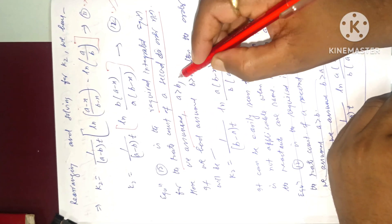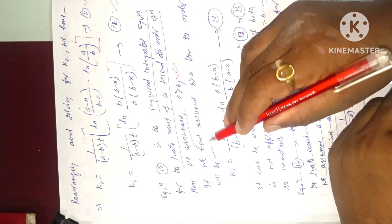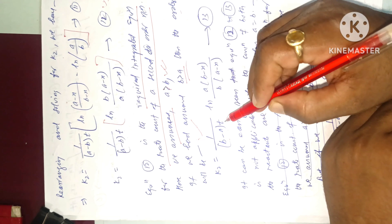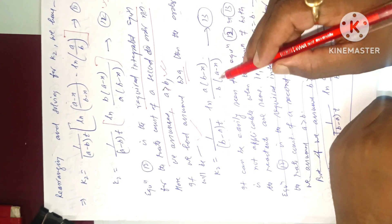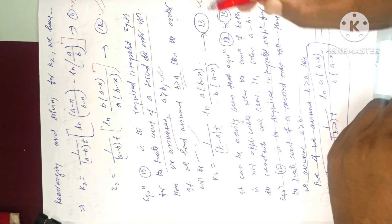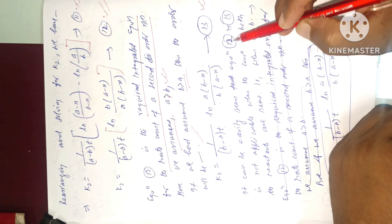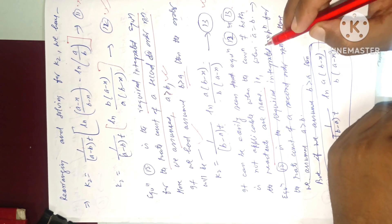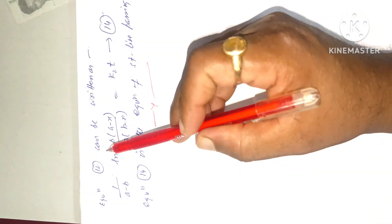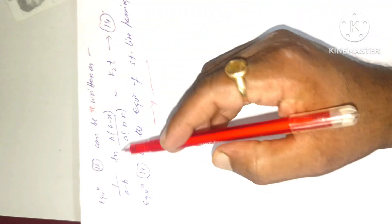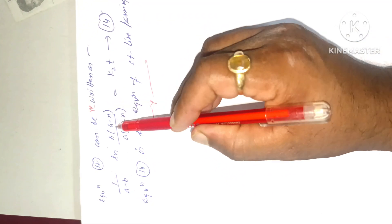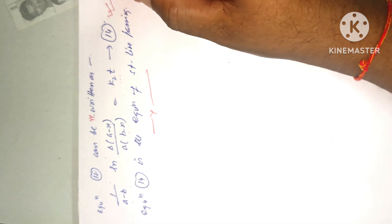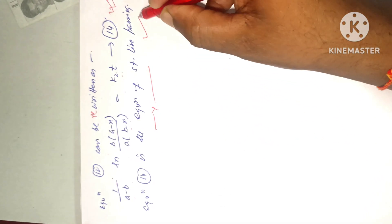We assumed a > b. If we had assumed b > a, then: k₂t = 1/(b − a) × ln[a(b − x) / b(a − x)], equation 13. Equations 12 and 13 are not applicable when the concentrations of both reactants are equal, i.e., when a = b. Equation 12 can then be rewritten as: 1/(a − b) × ln[b(a − x) / a(b − x)] = k₂t, equation 14, which is the equation of a straight line.